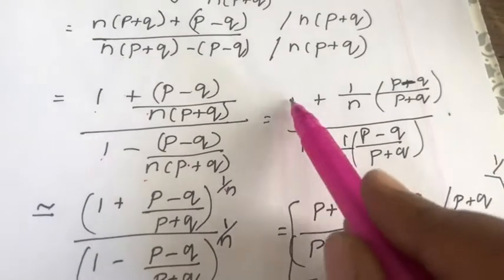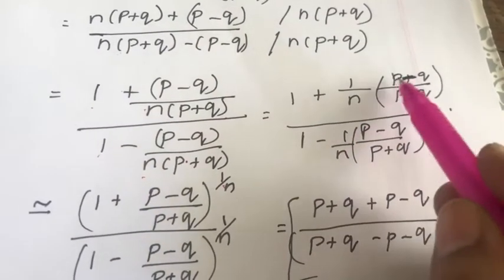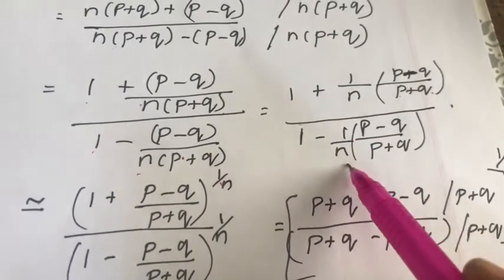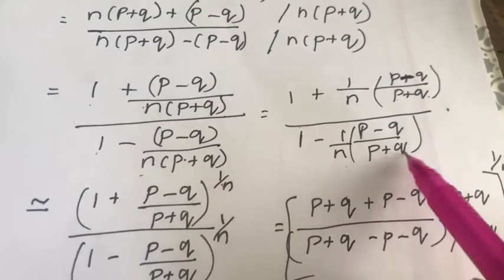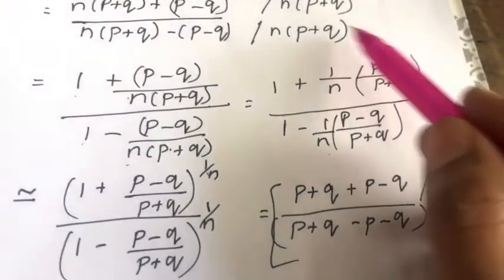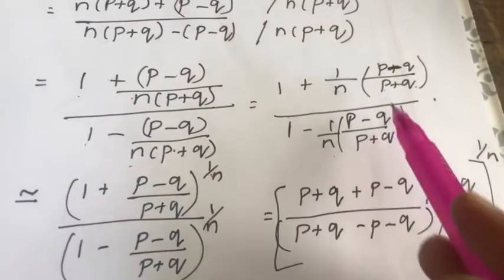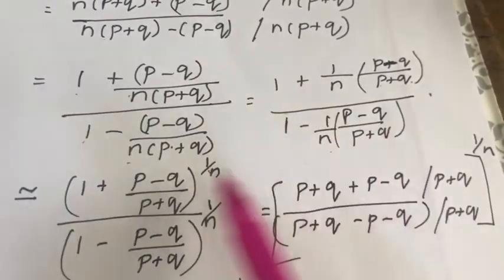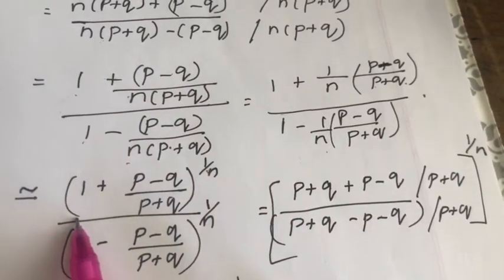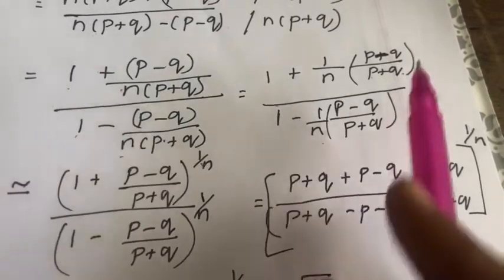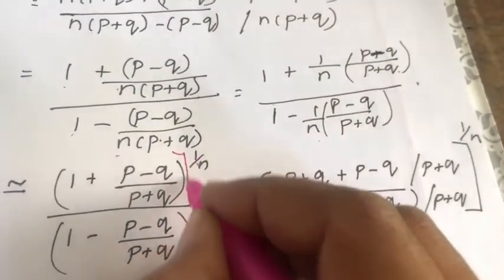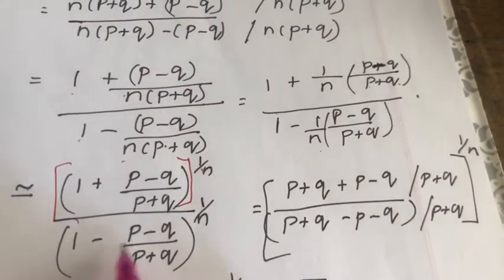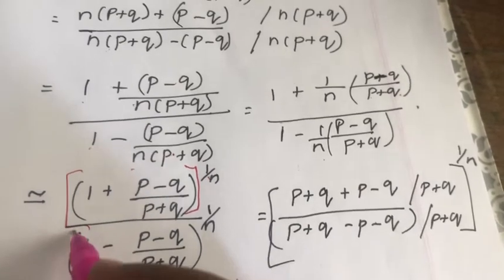That equals [1 + (1/n)·(p−q)/(p+q)] raised to the power 1/n, divided by [1 − (p−q)/(p+q)]^(1/n).